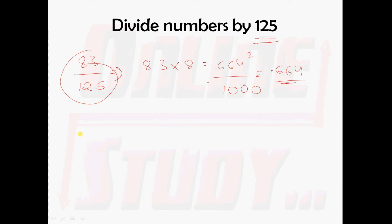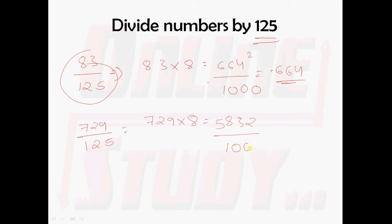We shall take one more example: 729 divided by 125. This 729 should be multiplied with 8. You will get 5832. And you have to divide it by 1000, so you will get 5.832.